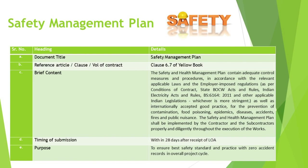The Safety Management Plan, enshrined in Clause 6.7 of the Yellow Book, is the cornerstone of any construction project, reflecting a deep commitment to the well-being of every individual on-site and within the surrounding community. The plan details rigorous control measures and procedures aligned with the highest standards of law and good practice, such as the state BOCW Acts and Rules, Indian Electricity Acts and Rules, and international standards like B.S. 6164-2011. It transcends compliance, aiming for the most stringent measures to ensure the safety and health of all, addressing preventative measures and strategies to mitigate risks related to fire, contamination, epidemics, and accidents.